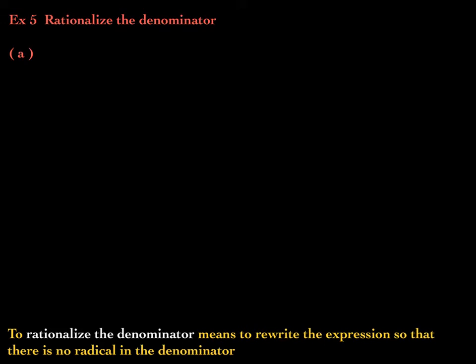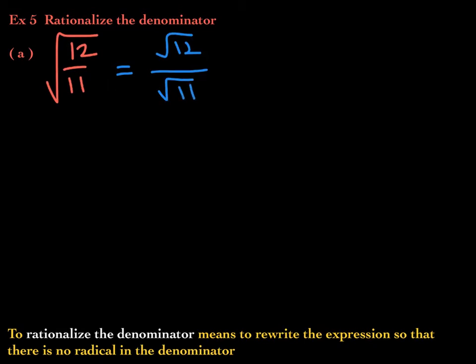Check out this first example: the square root of 12 elevenths. By the quotient rule for radicals, the square root of this quotient is equivalent to the quotient of their square roots, so we can rewrite it. The problem is that this expression is not simplified because the denominator has a radical, so we want to rewrite it so there's no radical in the denominator.